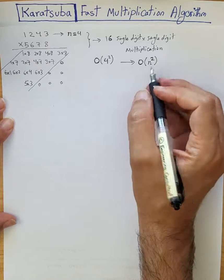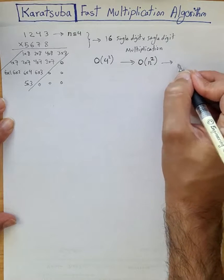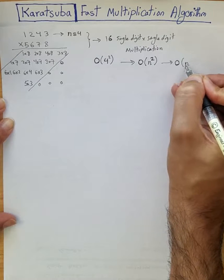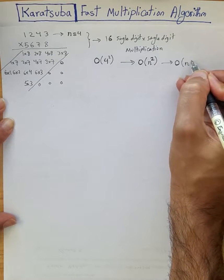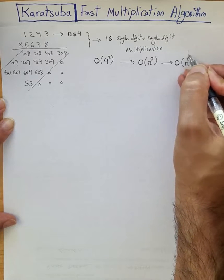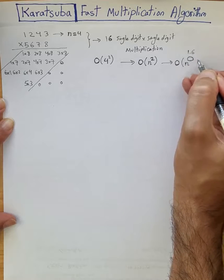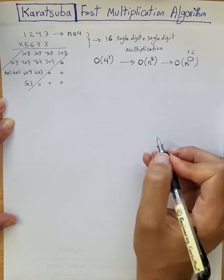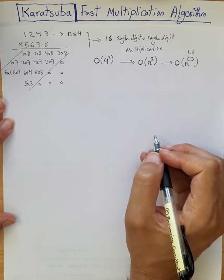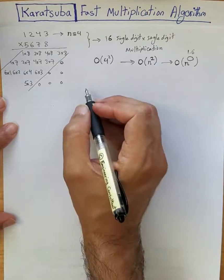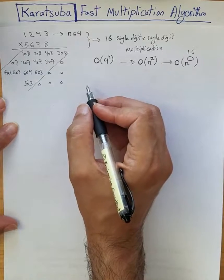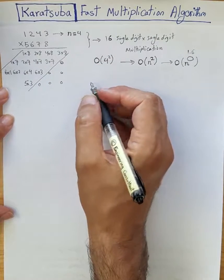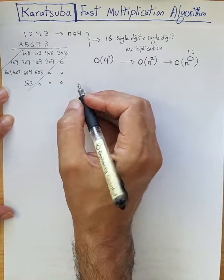So the whole idea is: how can we reduce this complexity? Can we find a method with complexity O(n^1.6), for example, so that it would be faster for a computer to compute the result of multiplication? One well-known method is Karatsuba's method.